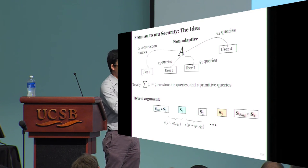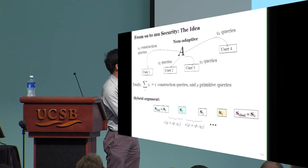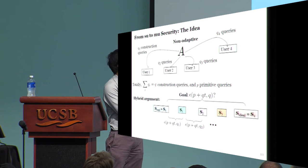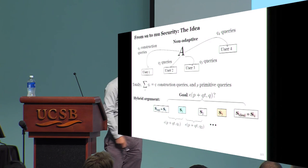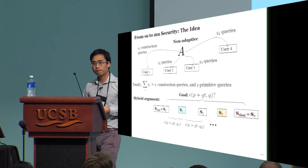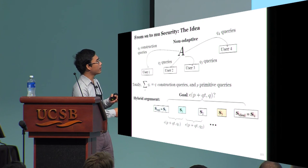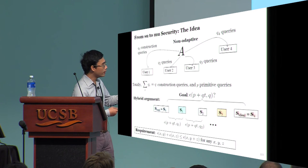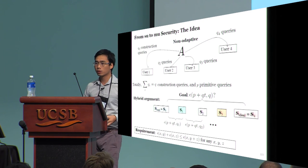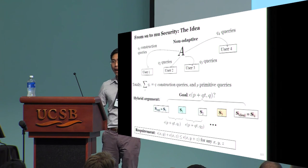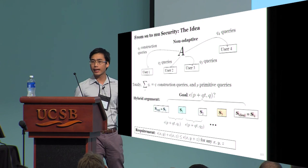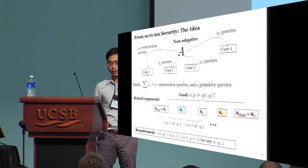The hybrid argument gives us the sum of some epsilons, but what we want is a completely different formula. For the desired bound to be tighter than the sum of these epsilons, we need the epsilon functions to satisfy some super-additivity requirement. And that's the technical restriction that I mentioned previously.